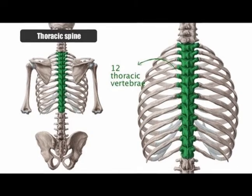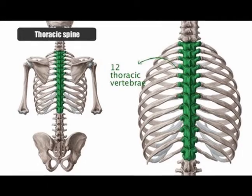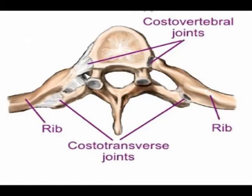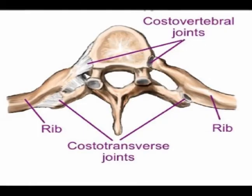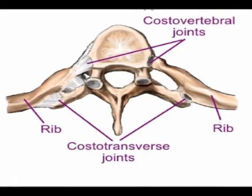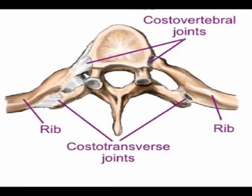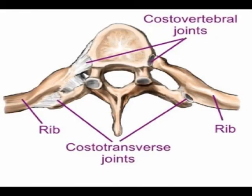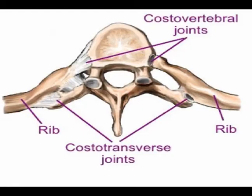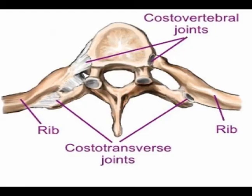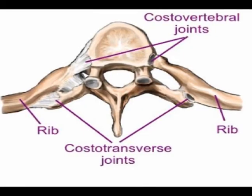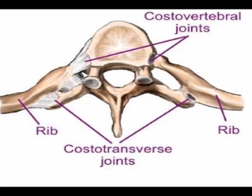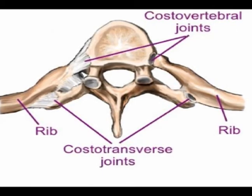There are 12 articulating vertebrae in the thoracic spine, and each of these vertebrae articulate with the ribs. Each of the vertebrae has what is called a demi-facet where it articulates with the rib head, and each of the transverse processes of the ribs have a costal facet where it articulates with the tubercle of the ribs. So the thoracic vertebrae articulate with the ribs in two different spots.